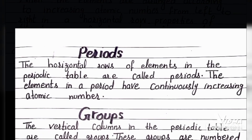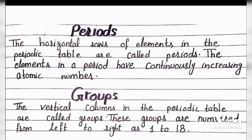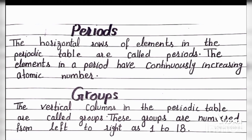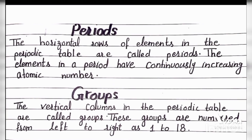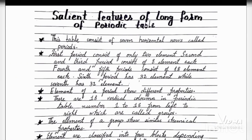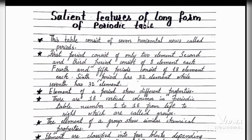The vertical columns in the periodic table are called groups. These groups are numbered from left to right as 1 to 18. So the periodic table has 18 vertical columns, all of which are called groups. Now we have the salient features of the long form of the periodic table.